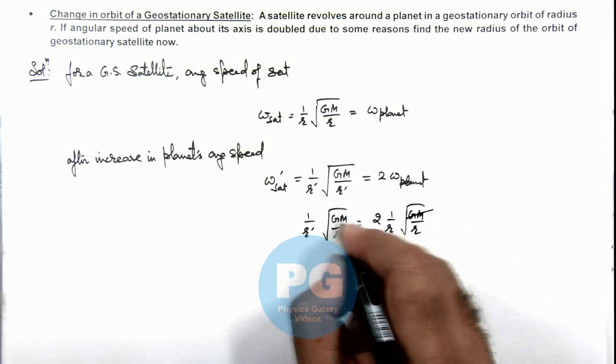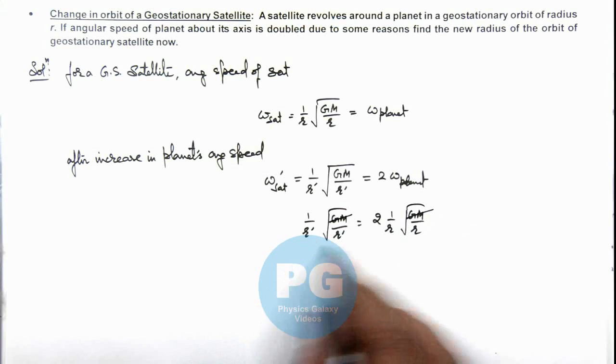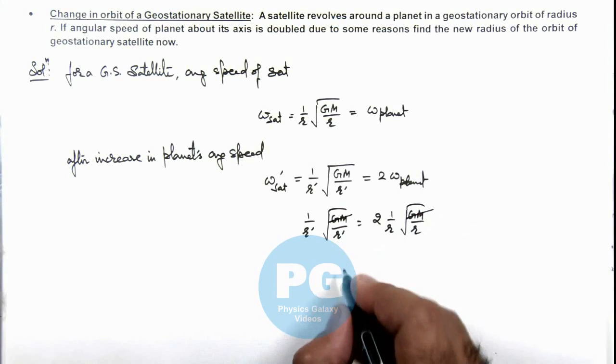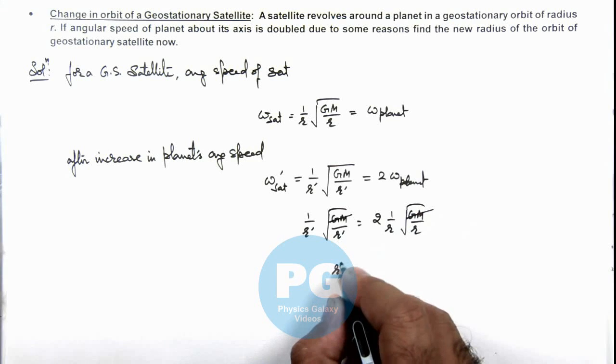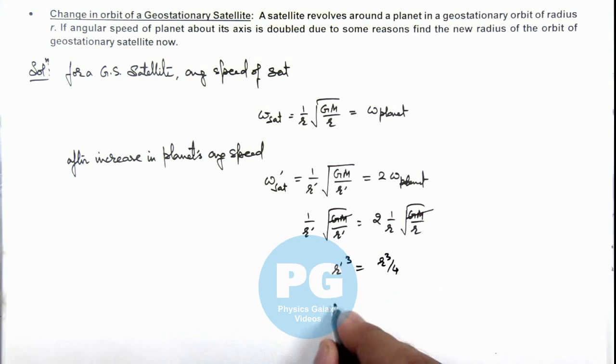GM gets cancelled out. On simplifying, if we square this term, we can write r' cubed equals r cubed by 4. That means the new radius of geostationary satellite can be written as r divided by cube root of 4.